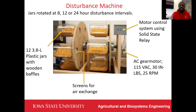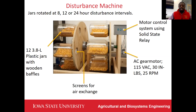Starting with the first objective, this picture shows different parts of the disturbance machine. The goal was to design and build a machine that supported and rotated 12 3.8-liter plastic jars with wooden buffers, as you can see in the picture. Jars were loaded with maize weavers and one kilogram of maize. Screens were placed between the top face of the lids and the holes of the wooden discs for air exchange inside the jars. A single-phase shaded-pole SCGE motor achieved 1.25 revolutions in three seconds.